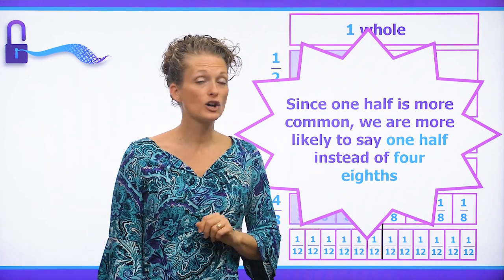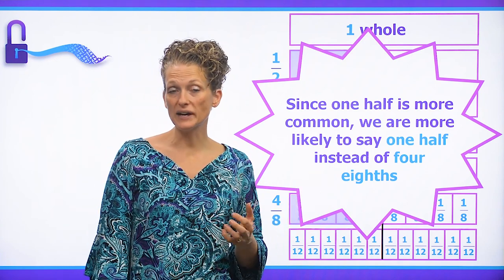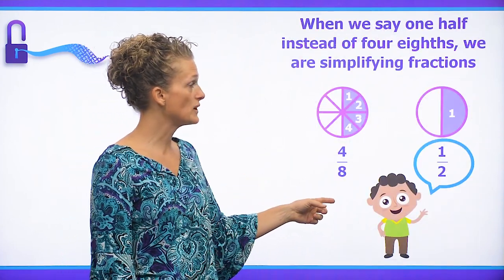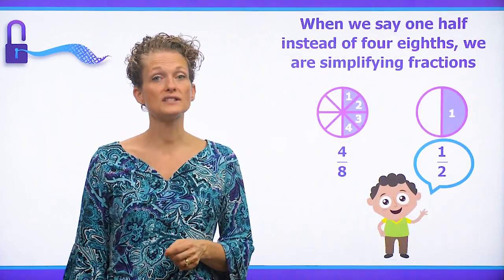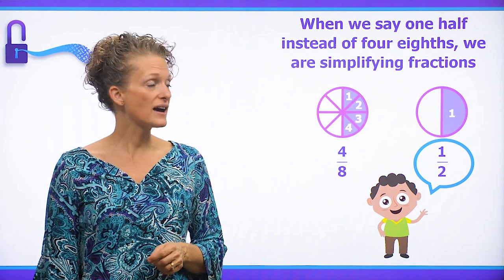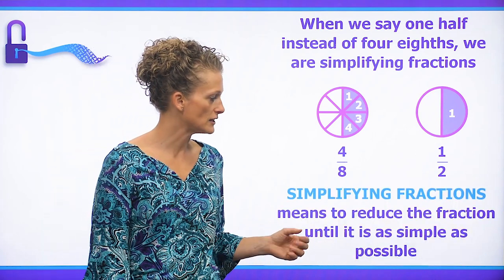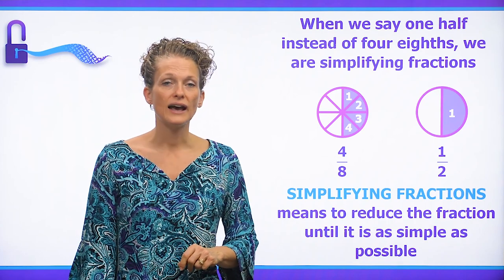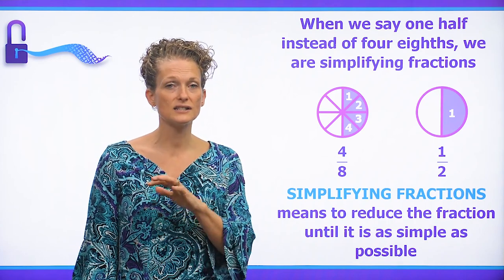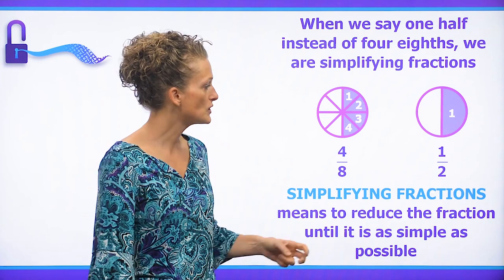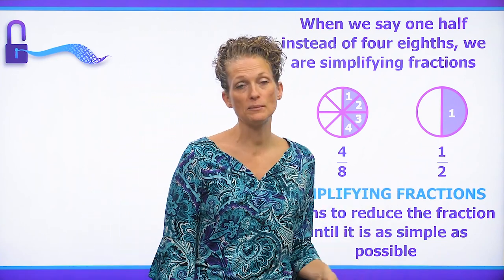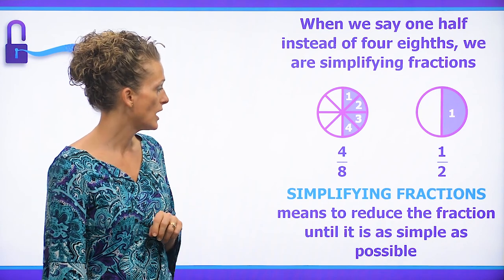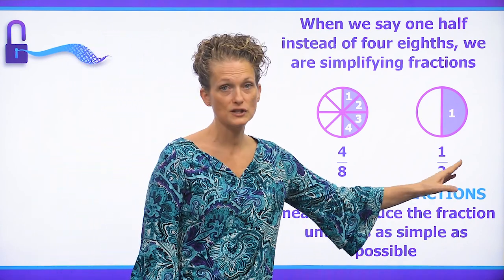Since one half is more common, we are much more likely to say one half than we are to say four eighths. When we say one half instead of saying four eighths, then we are actually simplifying the fraction. Simplifying a fraction means to reduce the fraction as much as possible until it is as simple as it will go. One half cannot be made any smaller — there is no equivalent fraction with smaller numbers.